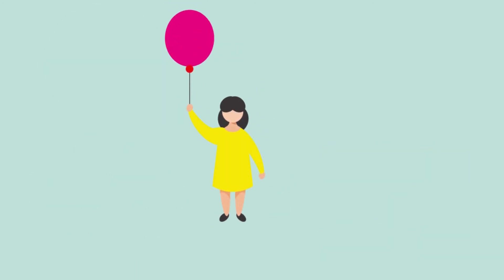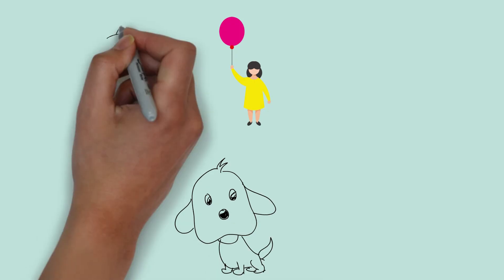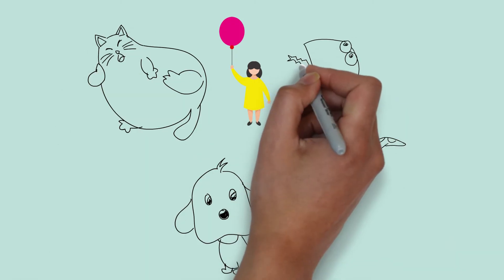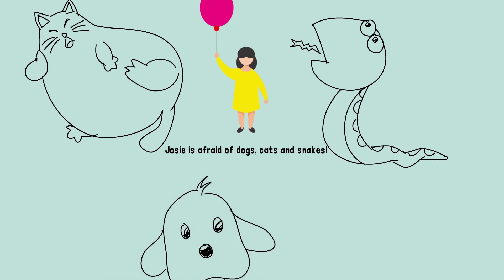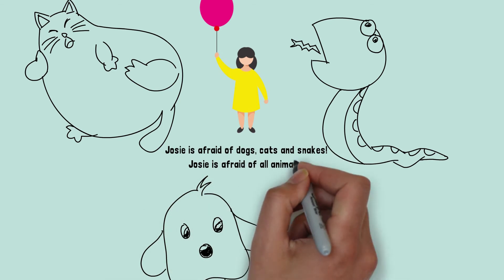Let's see another example. Josie is afraid of dogs, snakes and cats — therefore Josie is afraid of all animals. As you can tell, most inductive reasoning conclusions cannot be proven with certainty. Some of them are, at most, probable, and a lot of them need more data to support the truth of the conclusion.